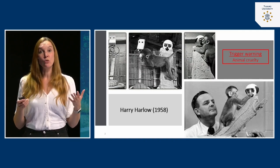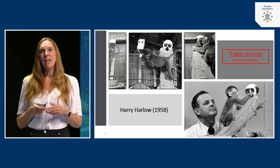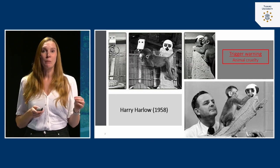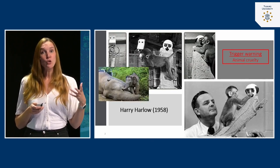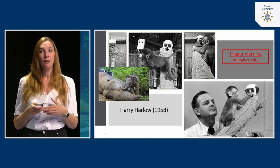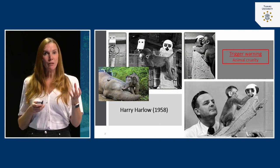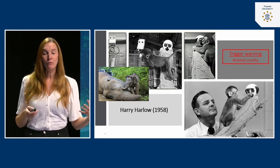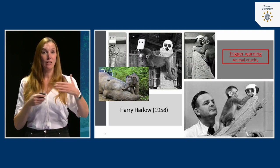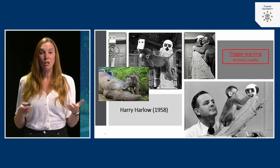Even later, when Harlow tried to place these monkeys in groups, that was not possible anymore. These monkeys were basically lost. They couldn't grow into normally functioning monkeys and also died at a very young age, probably from stress. We still see this type of disturbing behavior — for example, in elephants. Poaching is a big problem especially in parts of Africa, where mothers of baby elephants are poached for ivory. Those baby elephants have to grow up without the comfort of a mother.